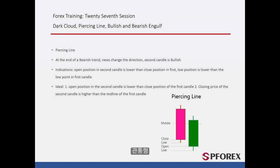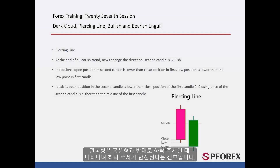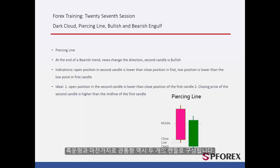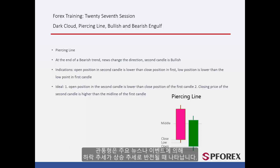Piercing Line forms in a downtrend, opposite to the Dark Cloud Pattern. It indicates a reversal trend in a declining direction. Like Dark Cloud, the Piercing Line Pattern consists of two candles. A Piercing Line may form when significant news or an event changes the downward direction of the trend to an upward one.